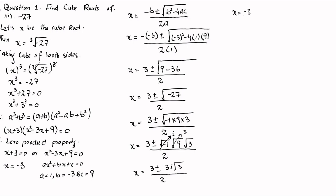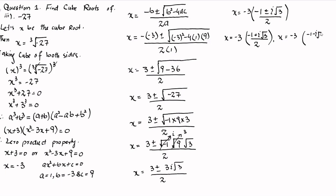Now 3 is common in the numerator, but we take minus 3 as common in order to make the internal terms equivalent to omega and omega squared. So x is equal to minus 3 times minus 1, plus or minus iota square root 3, divided by 2. We can write that x is equal to minus 3 times the quantity minus 1 plus iota square root 3 divided by 2, and x is equal to minus 3 times the quantity minus 1 minus iota square root 3 divided by 2. This term equals minus 1, this term equals omega, and this term equals omega squared. So x is equal to minus 3 omega and x is equal to minus 3 omega squared.